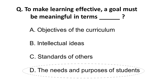The correct answer is the needs and purposes of the students. You should understand the needs and purpose of students to make learning effective. You cannot teach advanced-level content to Grade 1 or Grade 5 students. Based on their grade, ability, needs, and expected output, if that is your goal, learning will be effective.